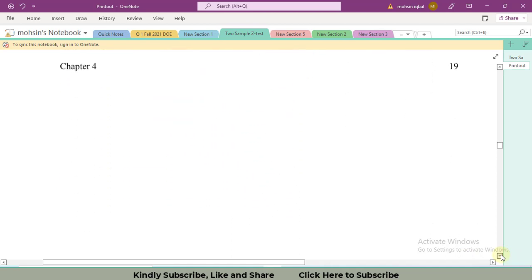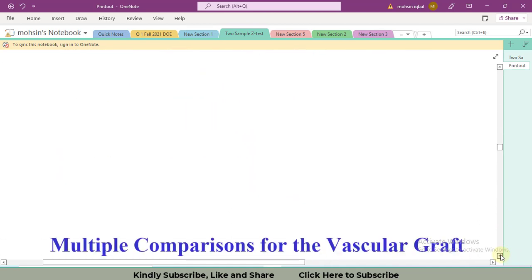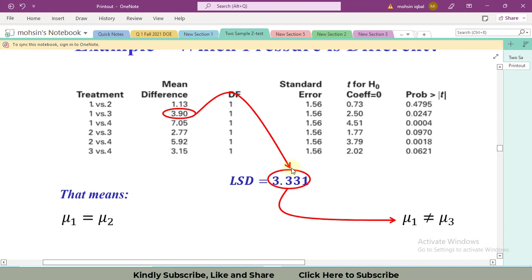Likewise, if we search for the second one, we see that the difference between 1 and 3 is 3.90, however LSD is 3.331. So the difference is greater than LSD value, therefore mu1 is not equal to mu3. This difference between the two levels made the ANOVA significant.